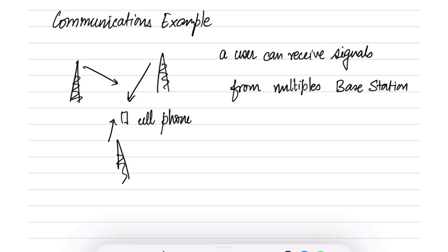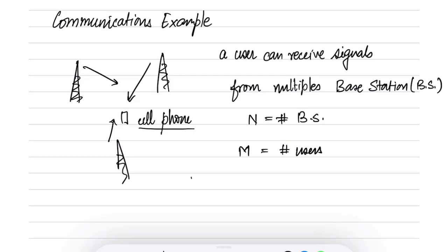Let us call them base stations. Let us say there are n base stations and m users — m is the number of users, meaning m cell phones. The transmit power — the power at which the signal is being transmitted by a tower — is denoted by p subscript i superscript j.